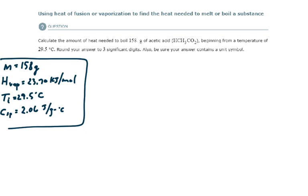In this problem, we are using heat of fusion or heat of vaporization to find the heat needed to melt or boil a substance. Let's look at what our substance is: acetic acid. We have 158 grams of acetic acid, and we are beginning from a temperature of 29.5 degrees Celsius.